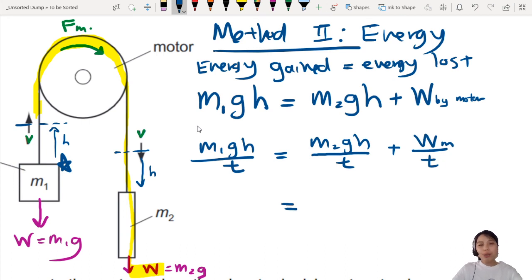So the next step is M1 times G, height over time. That looks very familiar. You travel a certain distance in a certain time. That's what we call velocity. So you can just say M1gV. Same thing here. They have the same velocity. So M2gV.